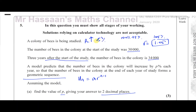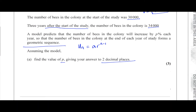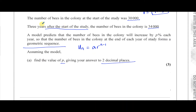So r is basically 100% plus p%. You have to take away 100% from r to give you what p is. The second issue is the idea about three years after the start of the study and what the value of n is. Let's write down what we know: the first term in our series is 30,000, at the start of the study.